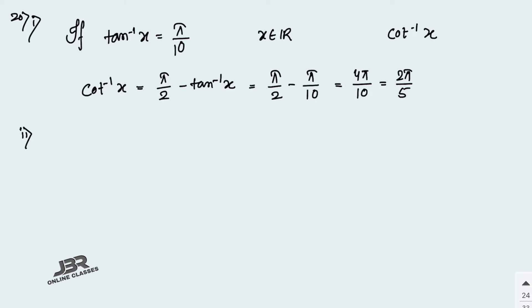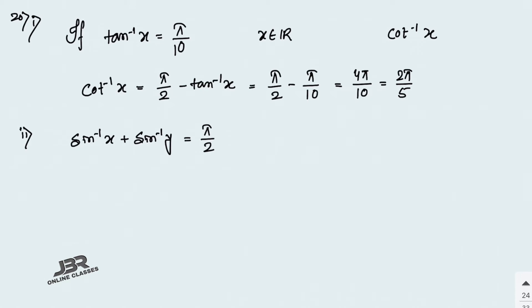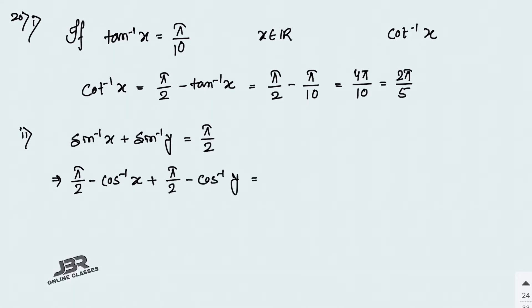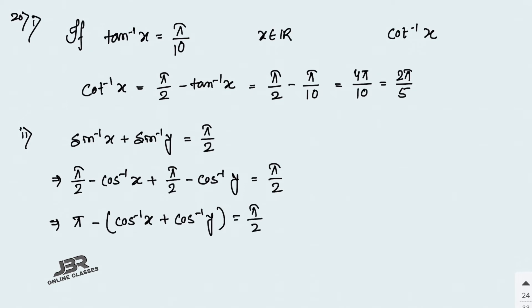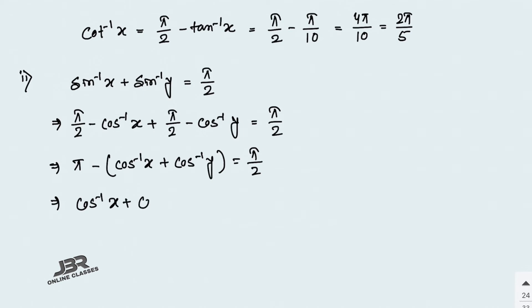Part 2: if sin⁻¹(x) + sin⁻¹(y) = π/2, find the value of cos⁻¹(x) + cos⁻¹(y). Since sin⁻¹(x) = π/2 − cos⁻¹(x), write (π/2 − cos⁻¹(x)) + (π/2 − cos⁻¹(y)) = π/2. That gives π − (cos⁻¹(x) + cos⁻¹(y)) = π/2, so cos⁻¹(x) + cos⁻¹(y) = π/2. That is your answer.